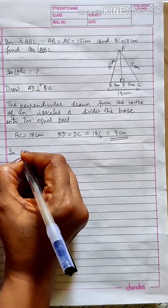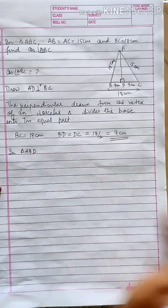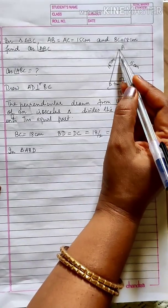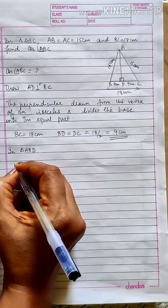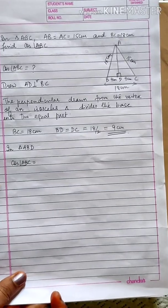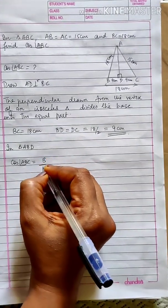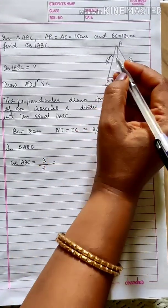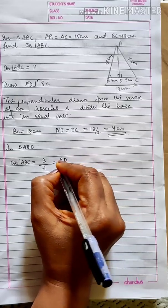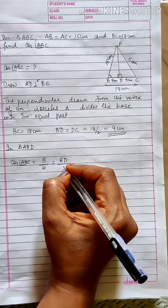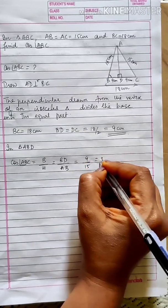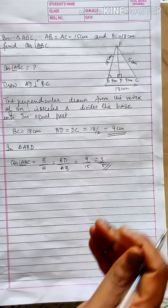Observing triangle ABD: in triangle ABD, you have to find cos of angle ABC. The ratio for cos is base upon hypotenuse. With respect to angle B, the base is BD and the hypotenuse is AB. So this becomes 9 by 15. Simplifying: 3 threes are 9, 3 fives are 15 — so cos of angle ABC equals 3 by 5.